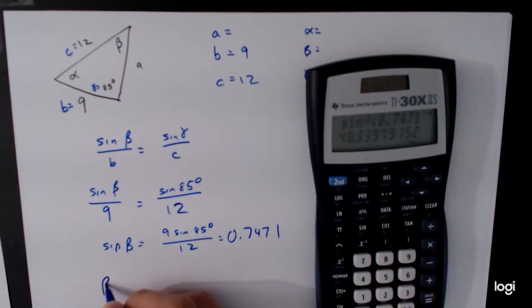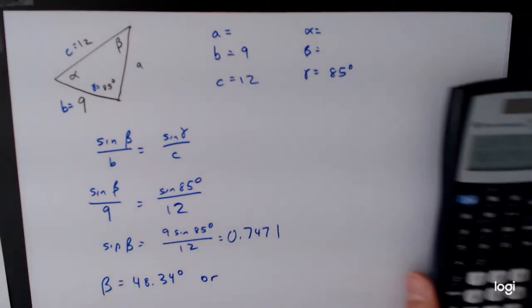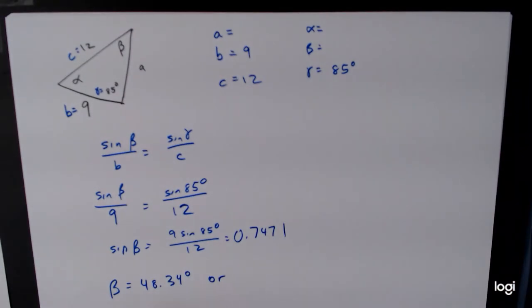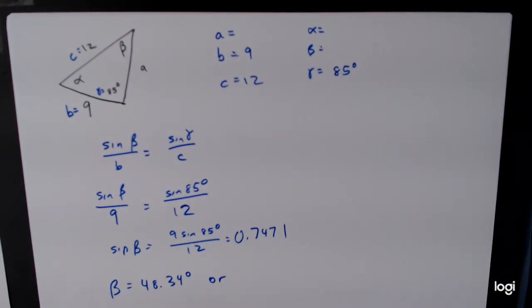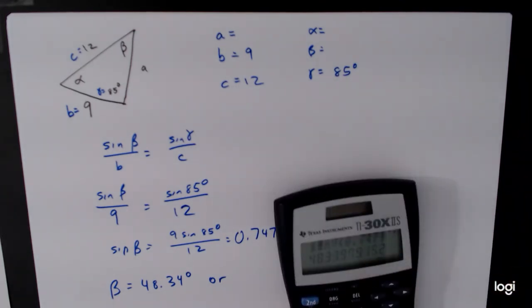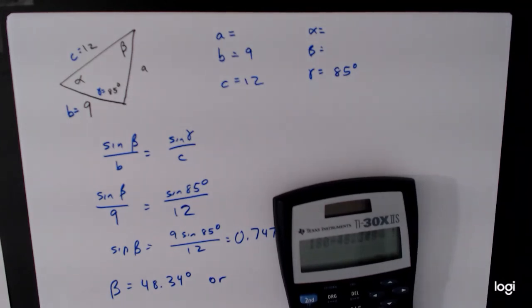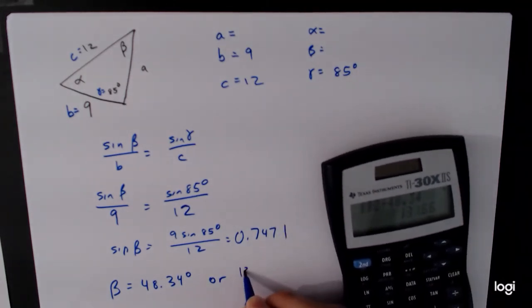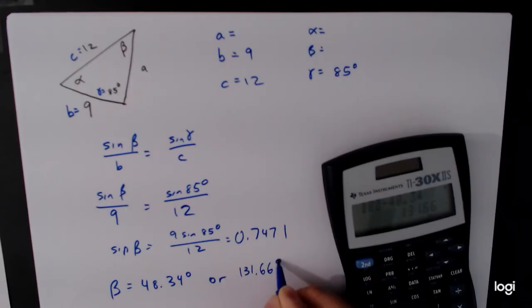So this tells us that beta is equal to 48.34 degrees, or it's going to be equal to something else. Now that something else comes from the unit circle. We have this diagram like this, so we know that this angle is 48.34 degrees. If we use the mirror image, then that part is 48.34 degrees. So we do 180 minus 48.34, and that gets us 131.66 degrees.